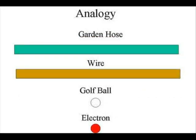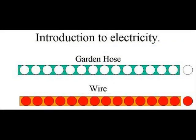To explain these three things, we're going to use an analogy. We have a garden hose that's going to represent our piece of wire, and a small golf ball to represent the electron. We're going to take a bunch of these golf balls and fill the garden hose up from one end to the other. This is going to represent our piece of wire, which is filled with electrons from one end to the other.